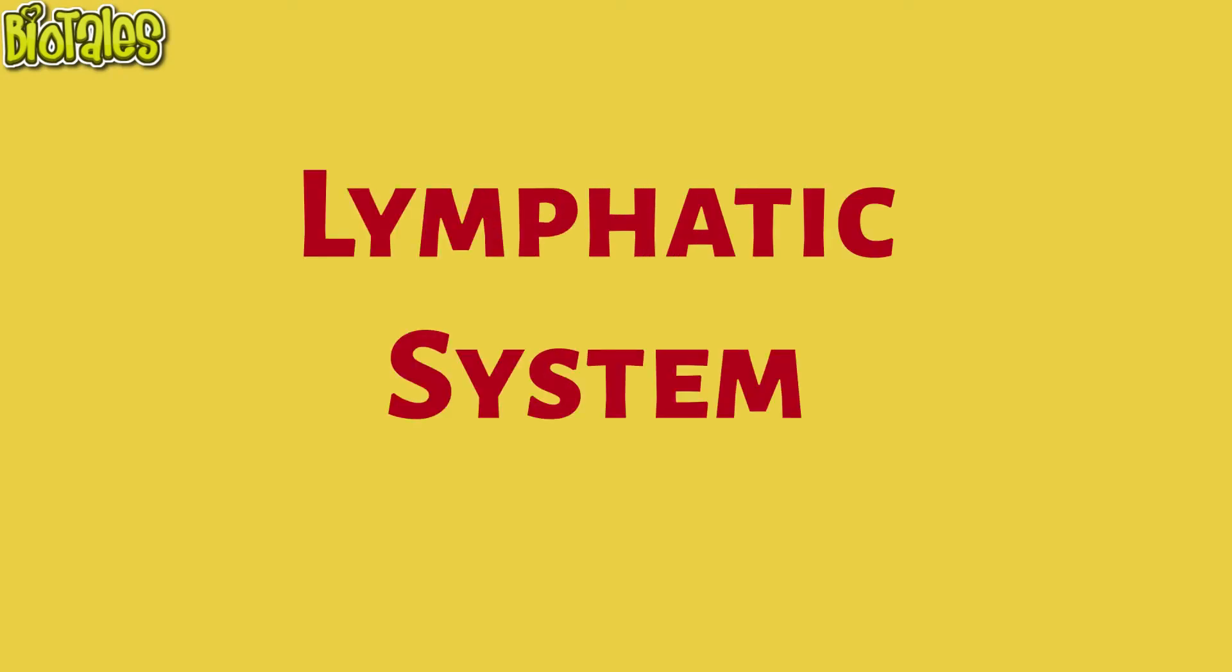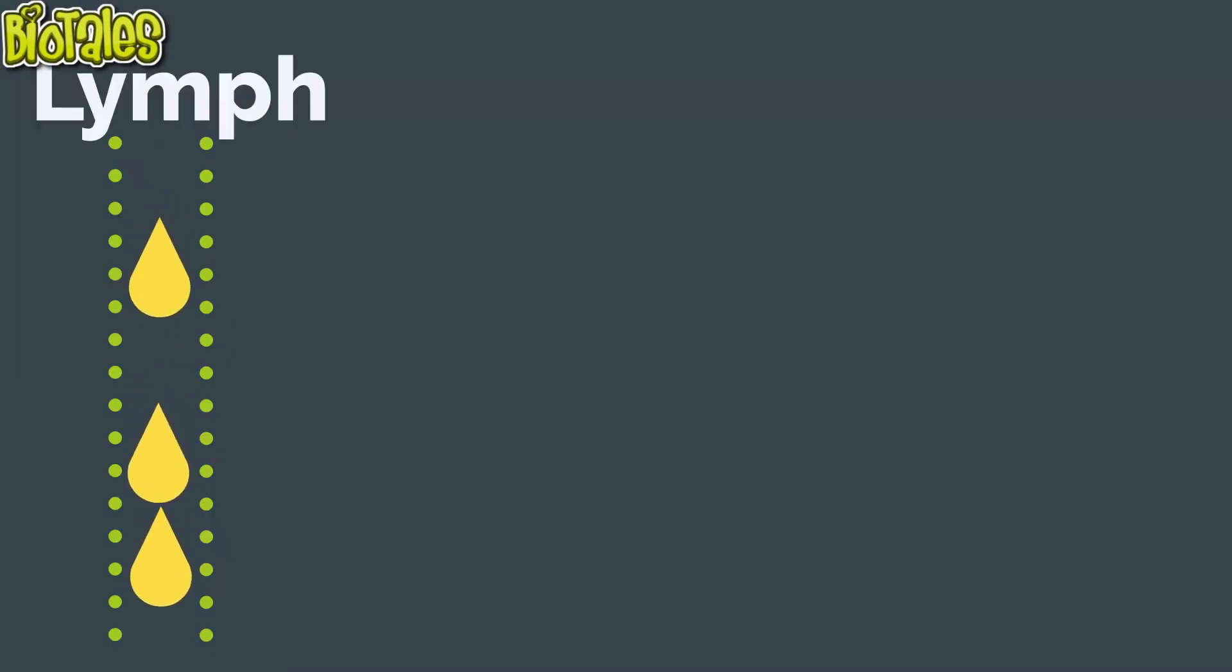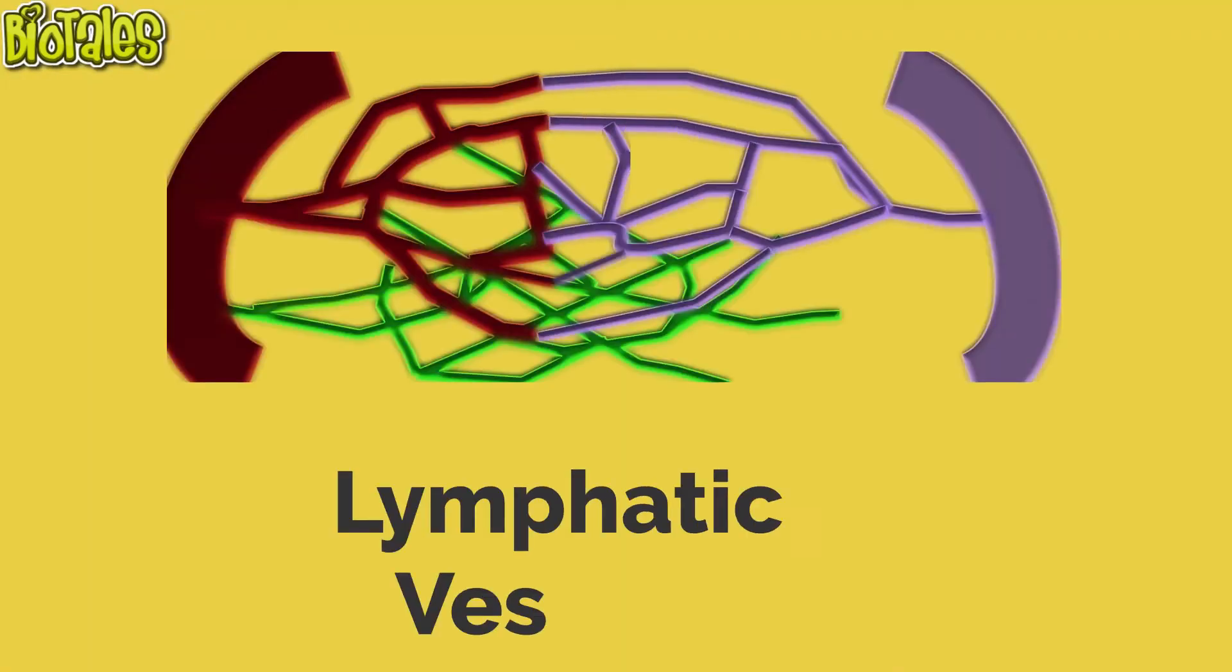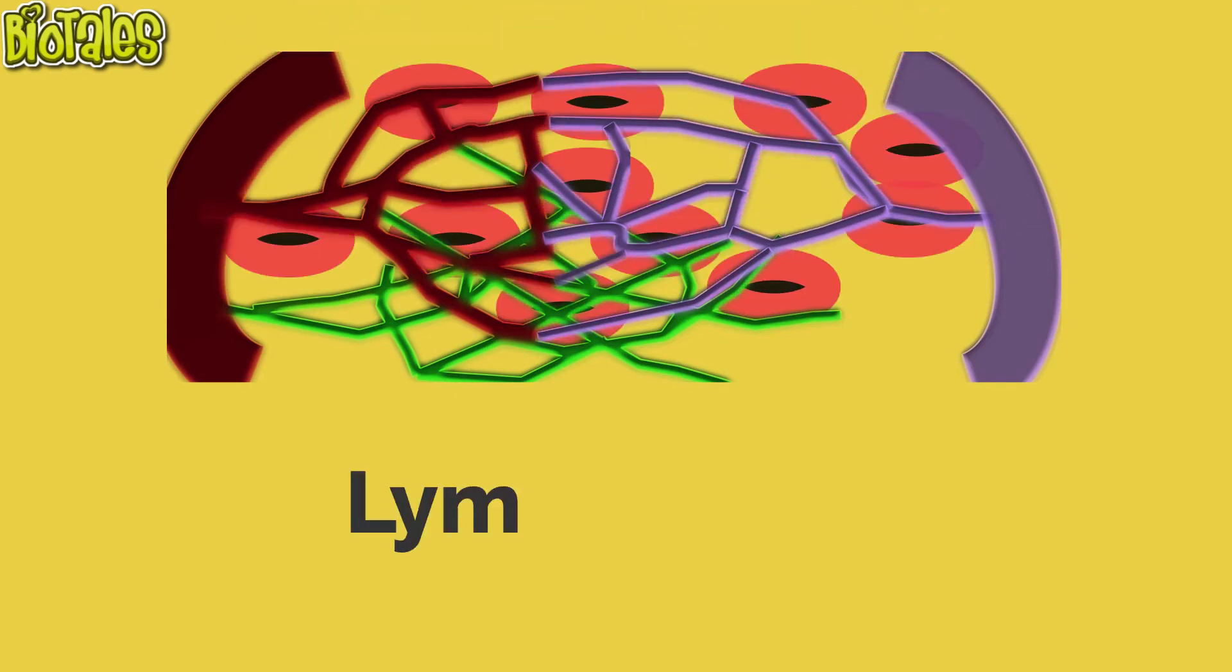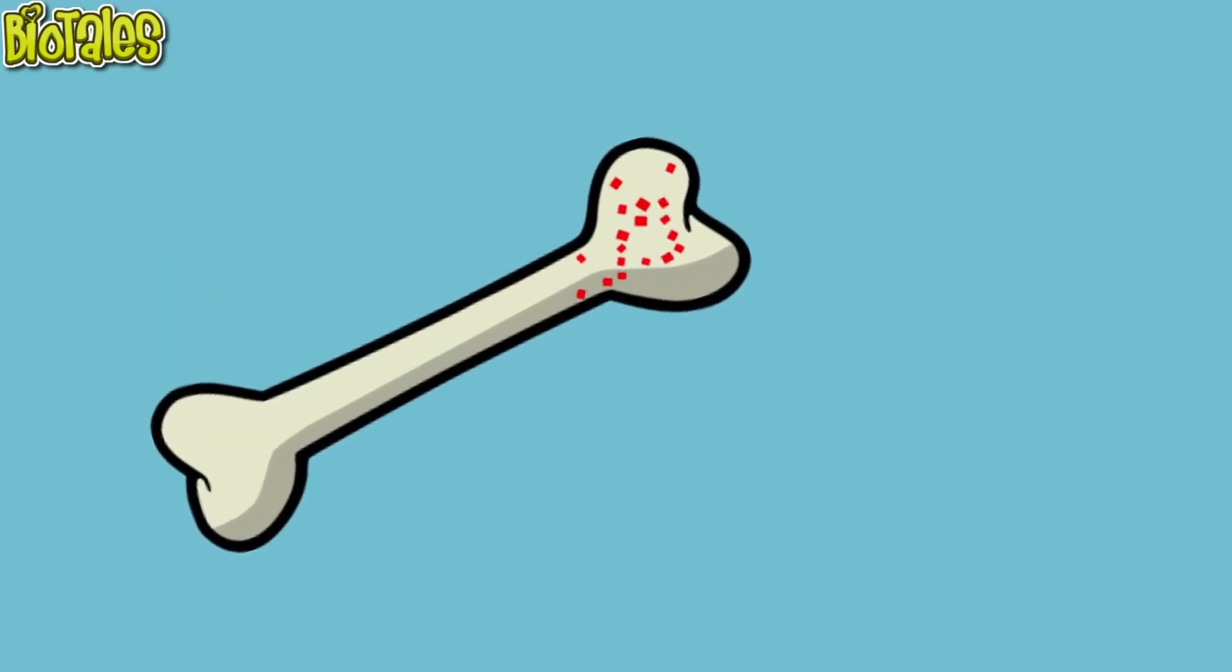The lymphatic system consists of a fluid called lymph, vessels called lymphatic vessels, and a number of structures and organs containing lymphoid tissues and red bone marrow.